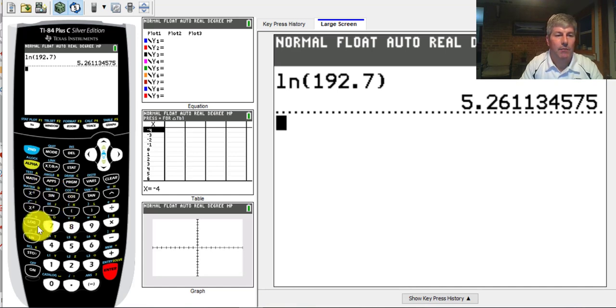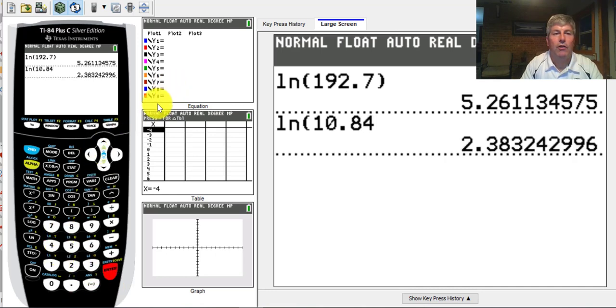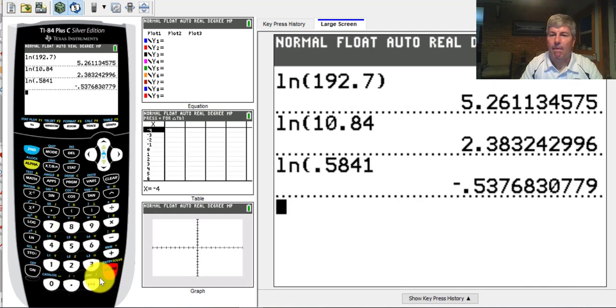The natural log of 10.84 is just 2.38, about half, which is interesting that the exponent is about half. The natural log of 0.5841 is negative. We can get a negative answer here, which does make sense because that's a fraction less than 1.